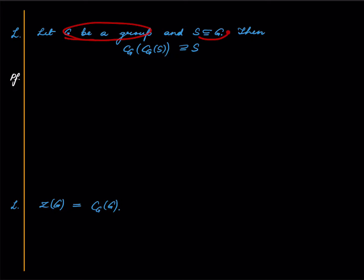Let G be a group and S be any subset of G. Then we have this containment: S is in the centralizer of the centralizer of S. Why is that?